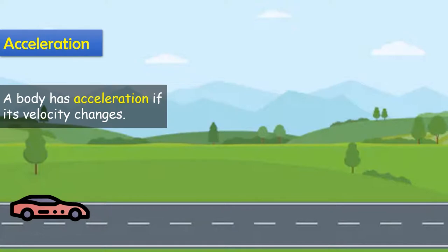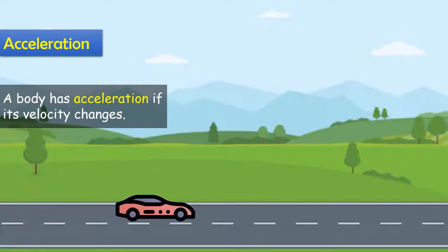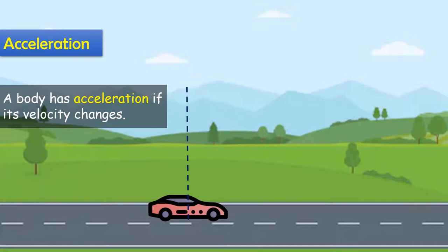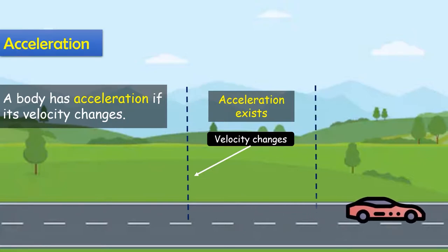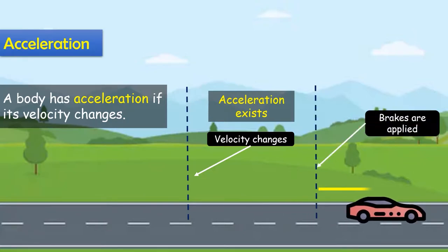For example, if you have a car and press the accelerator, the velocity of the car increases — there is an acceleration. If you apply the brake, the car decelerates. So pressing the accelerator or brake both involve acceleration.